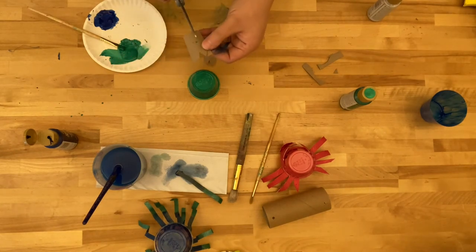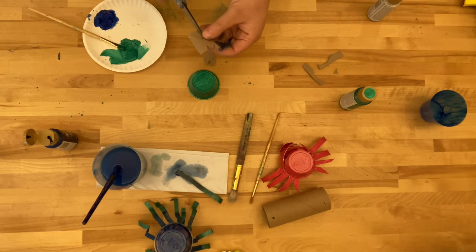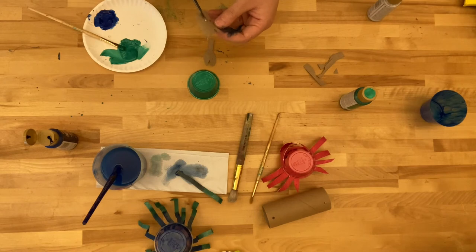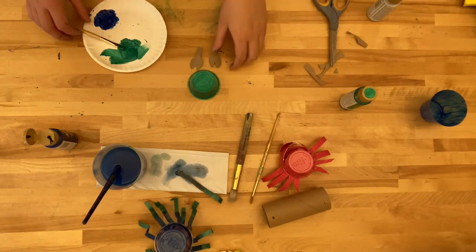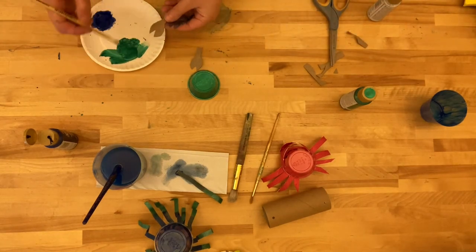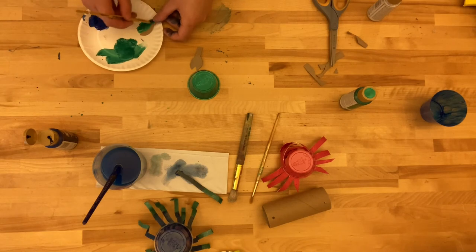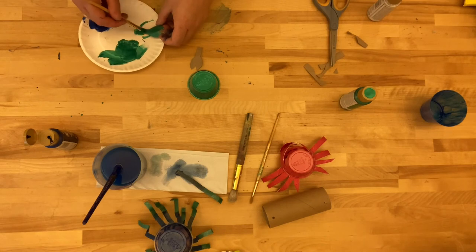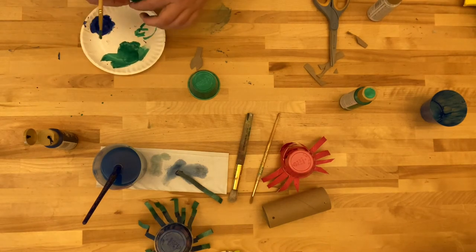Crabs usually have a bigger claw and a littler claw. So it's okay if your claws are not exactly the same size. And I'm gonna paint them the same color as the shell here. This nice green color. Crabs are not always red. Sometimes they're green, brown. There are even blue crabs.